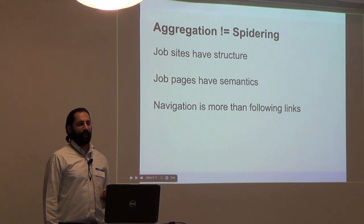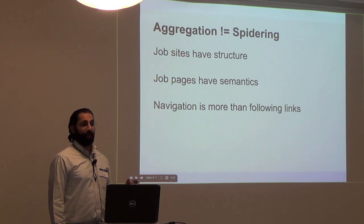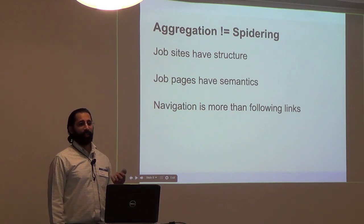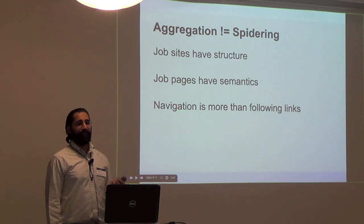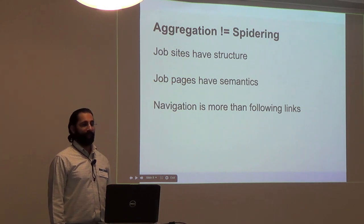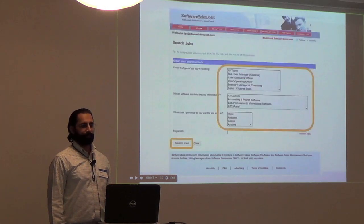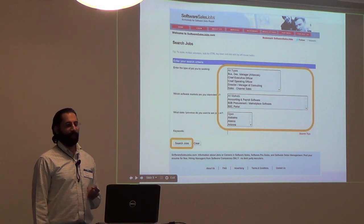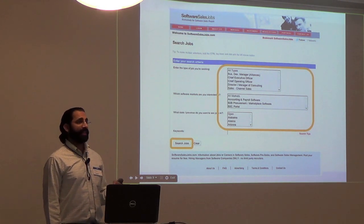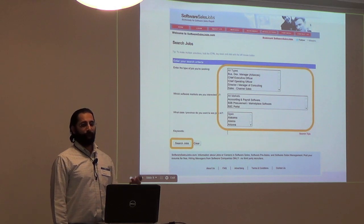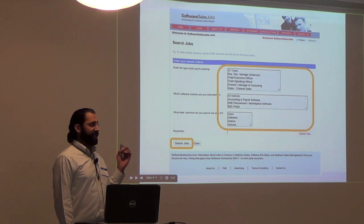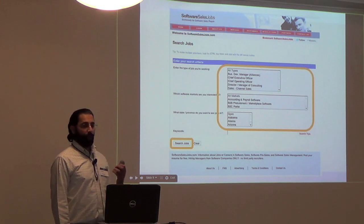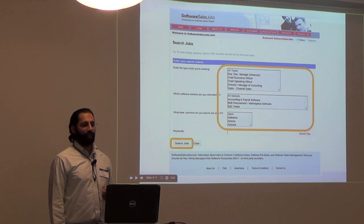Aggregation is not spidering — there's structure. There are semantics to the job navigation pages and to the job detail pages, and navigation can be about more than just following links from one page to another. Take this job site that we aggregate: a traditional crawler can't get to the jobs from here because you need to post something. The aggregation engine is able to do a POST from this form with the right data and continue on to the job pages.